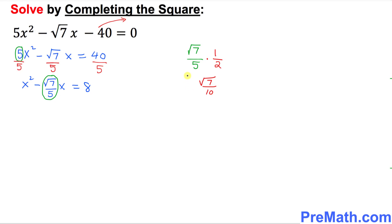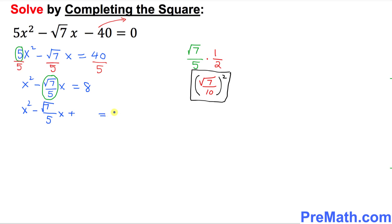The final step in this part is to square that fraction. So (√7 / 10)² is the quantity we're going to add to both sides of the equation. Let's go ahead and add it: x² minus (√7/5)x plus (√7/10)² equals 8 plus (√7/10)².